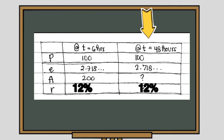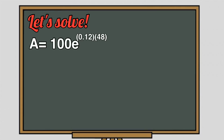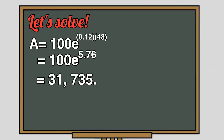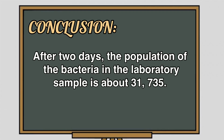Now we can determine the population after 2 days. Using the known variables, A is equal to 100 times E raised to 0.12 times 48, that is equal to 100 E raised to 5.76, and that is equal to 31,735. Therefore, after 2 days, the bacteria's population is about 31,735.